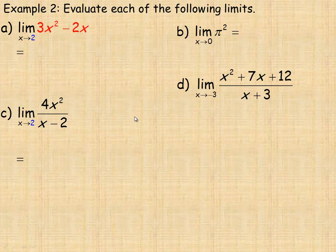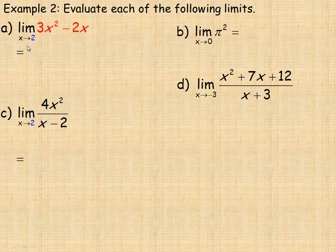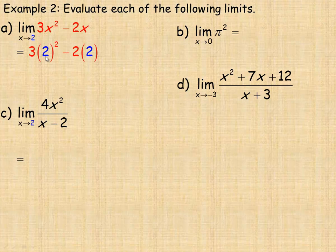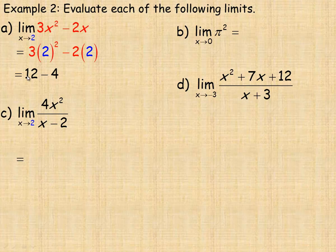Now we'll evaluate some examples. First: the limit of 3x squared minus 2x as x approaches 2. We're substituting 2 in place of x, because when x approaches 2, substituting tells us what the function is approaching. Two squared is 4 times 3 is 12, and 2 times 2 is 4. So 12 minus 4 equals 8. As x approaches 2, the limit of this expression approaches a value of 8.